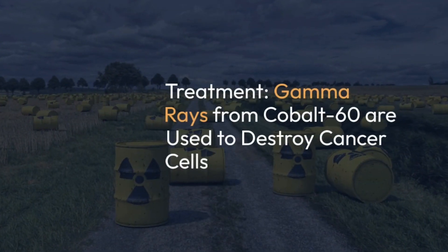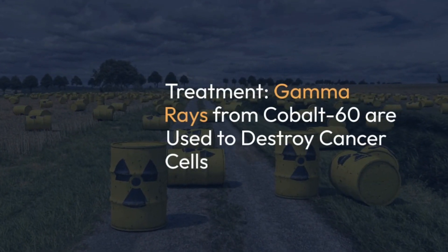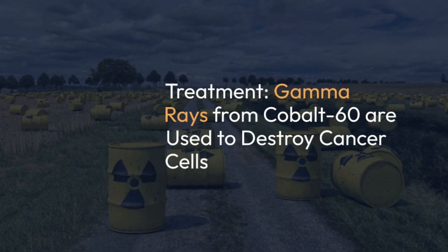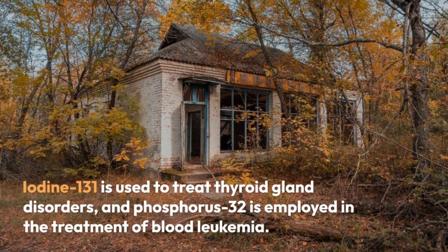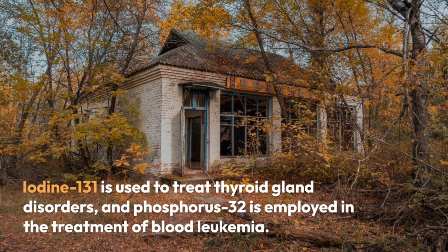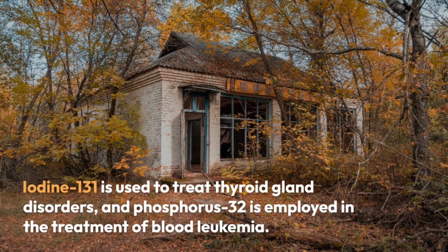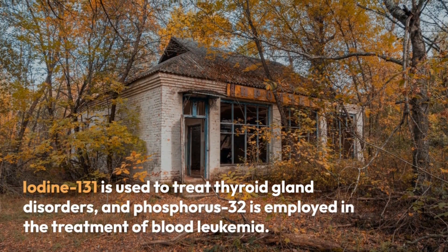Treatment: Gamma rays from Cobalt-60 are used to destroy cancer cells. Iodine-131 is used to treat thyroid gland disorders, and Phosphorus-32 is employed in the treatment of blood leukemia.